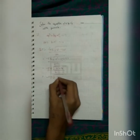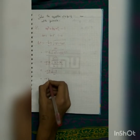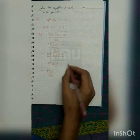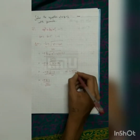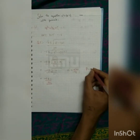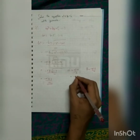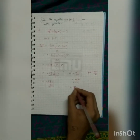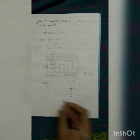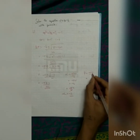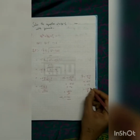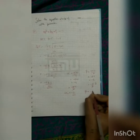Minus 5 plus or minus under root of 1, over 2. Minus 5 plus or minus under root 1, which is 1, over 2. So from here, we should find alpha and beta. Alpha is equal to minus 5 plus 1 over 2. And beta is equal to minus 5 minus 1 over 2. Minus 5 plus 1 is minus 4. Therefore, minus 4 over 2 is minus 2. Therefore, alpha is minus 2. Beta: minus 5 minus 1 is minus 6. So minus 6 over 2 is minus 3. So beta is equal to minus 3.